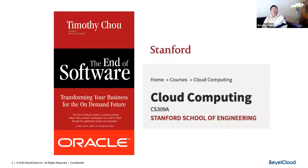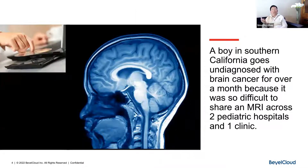I've had a life on both the academic and commercial sides. I wrote a book called 'The End of Software' that predicted the rise of companies like Salesforce and NetSuite. Through this class I met Anthony, and because of him I started learning things that completely surprised me. One story from just last year: a little kid went undiagnosed with brain cancer because people are still using CD-ROMs to pass data around — although some are starting to use USB sticks.